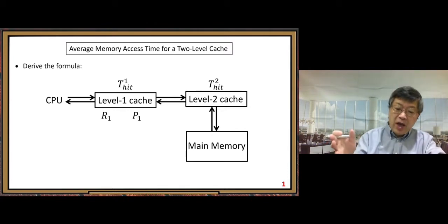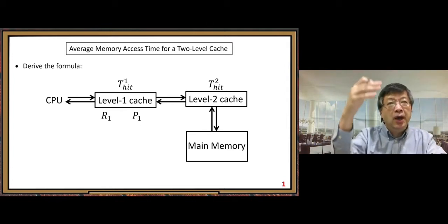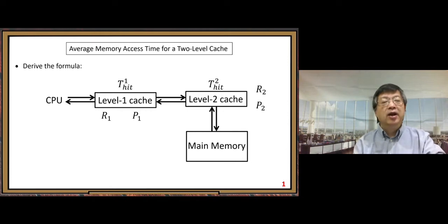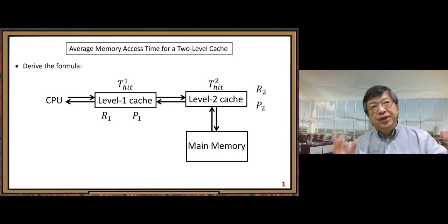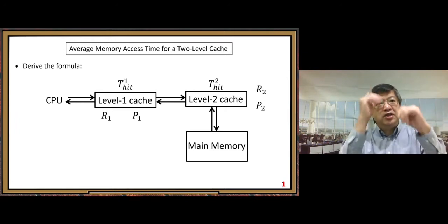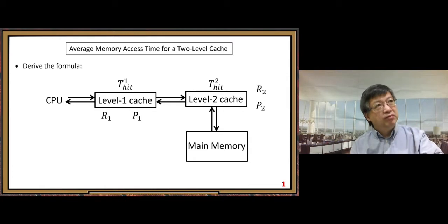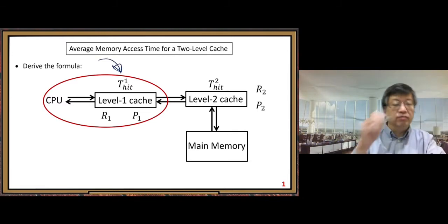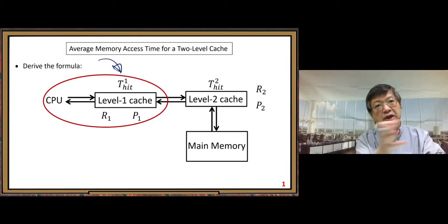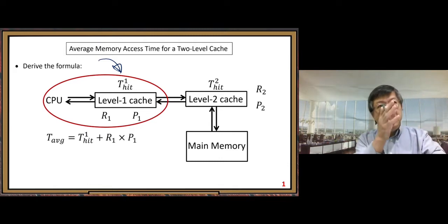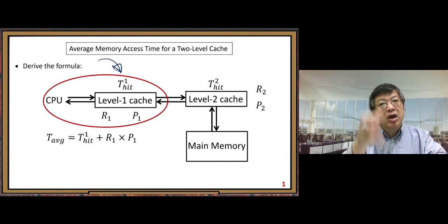For L2 cache it has its own hit time t2, its own miss rate r2, and penalty p2. Now we need to connect all these parameters to get the overall average memory access time. We apply the original AMAT formula to the first circle containing just L1 cache and the CPU. So we have: T_average = t1_hit + r1 × p1.